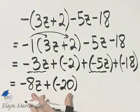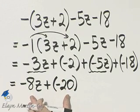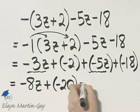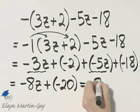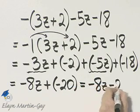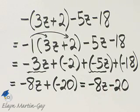Now you can go no further because these are unlike terms. You could write this as negative 8z minus 20. Either of these is okay though. You've simplified as much as possible.